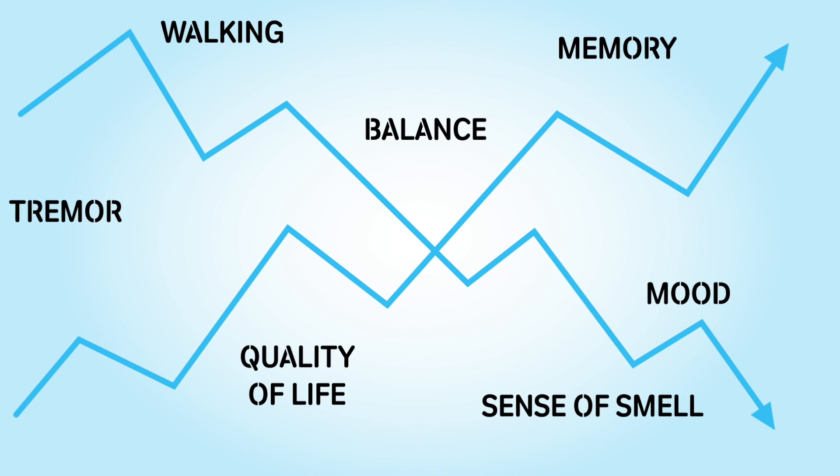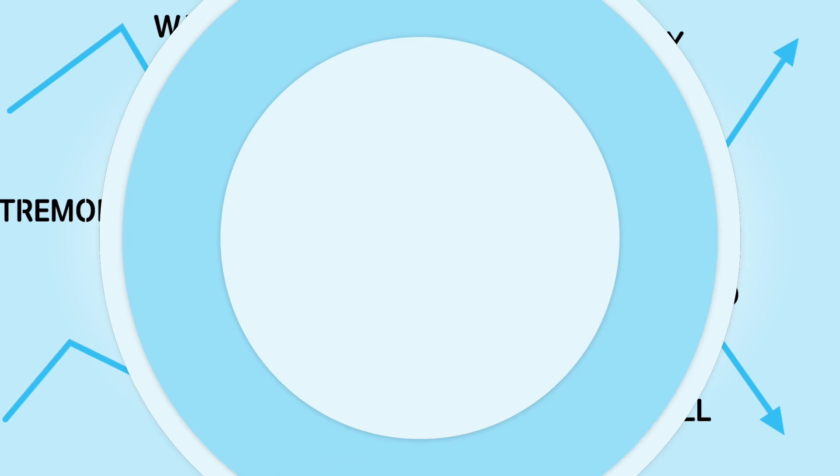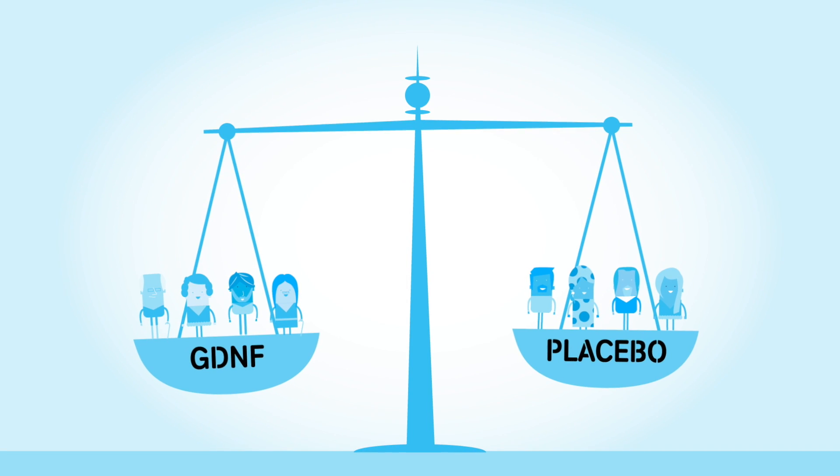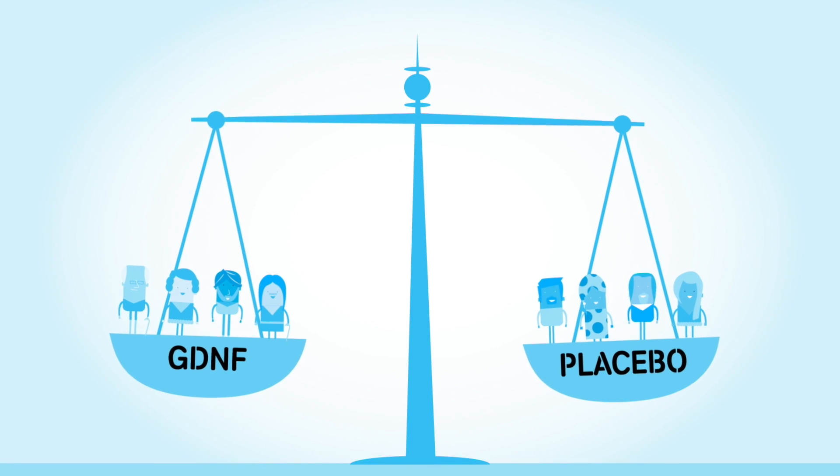Throughout the study, the researchers painstakingly measured every aspect of Parkinson's. After nine months, both groups had improved, but disappointingly there wasn't a clear enough difference between them.